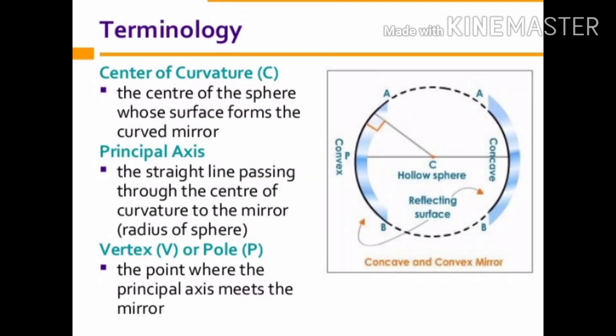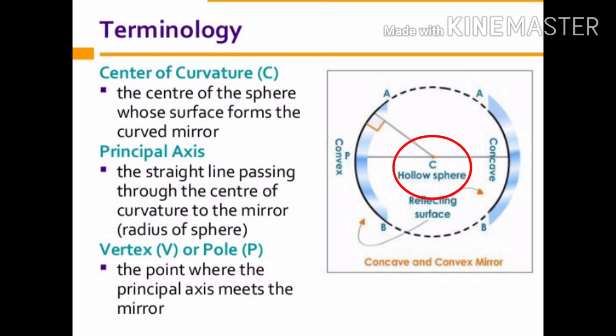Before we move further on spherical mirrors, we need to recognize and understand the meaning of a few terms commonly used in discussions about spherical mirrors. The center of the reflecting surface of a spherical mirror is a point called the pole, represented by the letter P. It lies on the surface of the mirror. The spherical surface forms a part of a sphere, and the center of that sphere is called the center of curvature, represented by the letter C. Please note that the center of curvature is not a part of the mirror; it lies outside its reflecting surface.